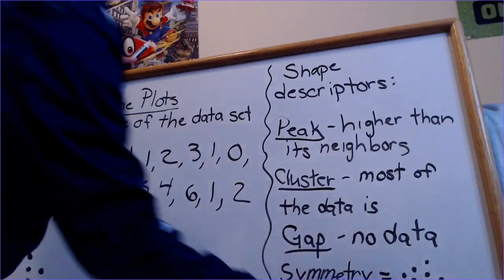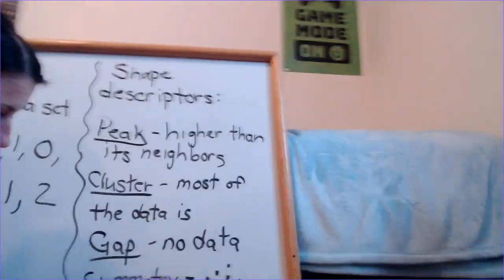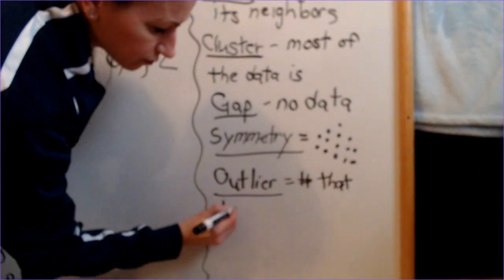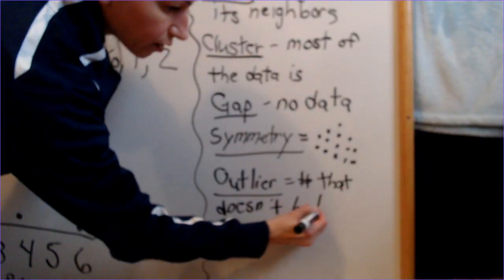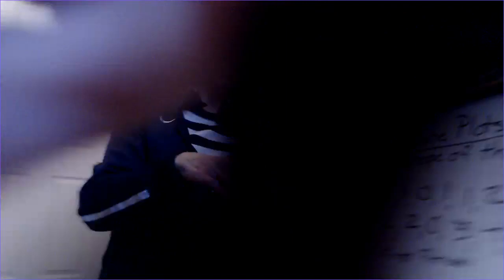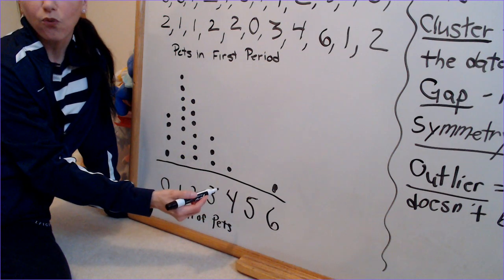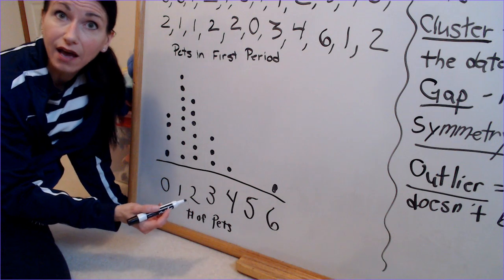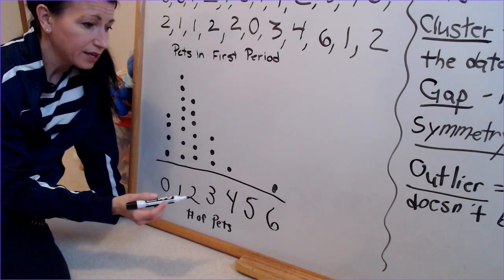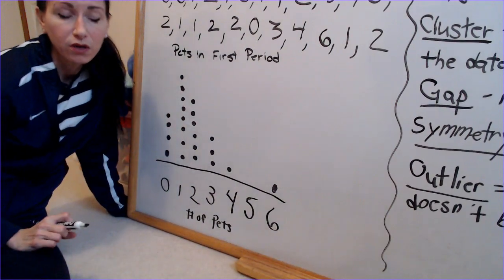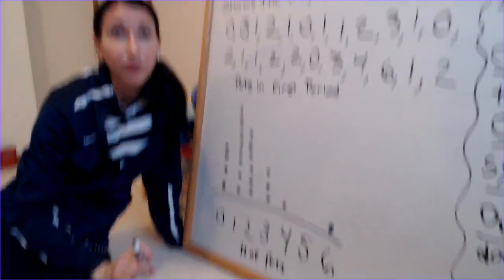Another vocabulary word is outlier — we had this definition the first week: it's the number that doesn't belong. In our graph I would say we don't really have an outlier, because six is not that far away from four. But if the girl from the farm had 42 animals, that would be an outlier — nothing, nothing, nothing, nothing, 42. That would be pretty evident.